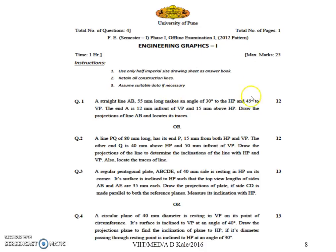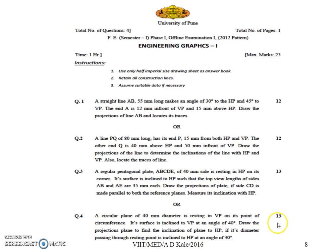This is the overall idea about the Phase 1 examination, where there will be 2 questions on lines with an option of 1, each carrying 12 marks. Another 2 questions, question numbers 3 and 4, are each of 13 marks and both are on the topic of planes.